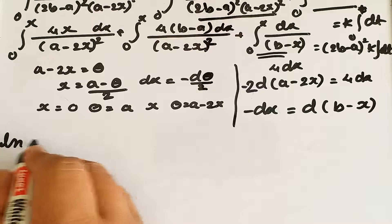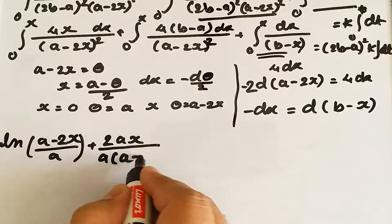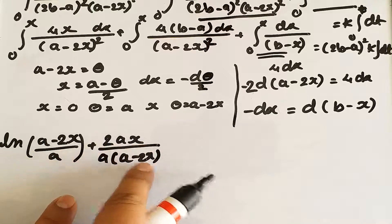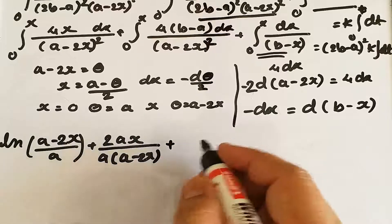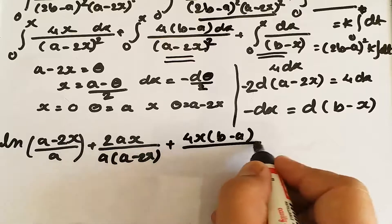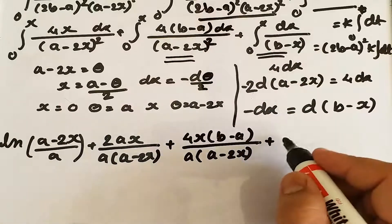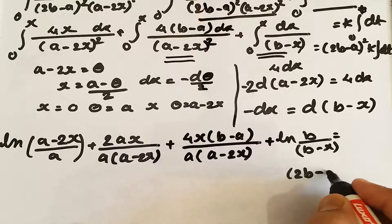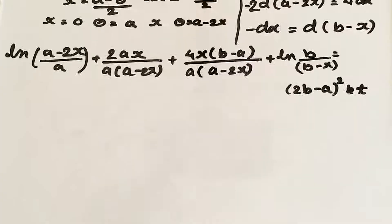Taking the direct solutions: the first integral gives ln(a − 2x)/a + 2ax / [a(a − 2x)]. The second integral gives 4x(b − a) / [a(a − 2x)]. The third integral gives ln(b/(b − x)). Combining: ln[(a − 2x)/a] + 2ax/[a(a − 2x)] + 4x(b − a)/[a(a − 2x)] + ln[b/(b − x)] = (2b − a)²·k·t.